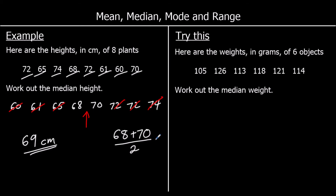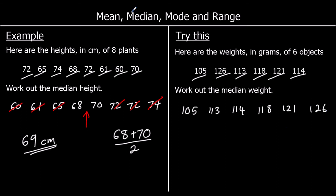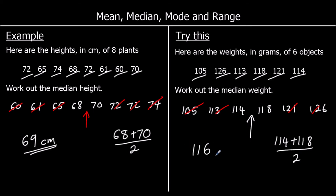Here's one for you to try. We're finding the median again, so put the numbers in order first: 105, 113, 114, 118, 121, 126. We can cross off two from both sides and we're left with two numbers in the middle, so we go halfway between them. Halfway between 114 and 118: 114 plus 118 divided by two gives us 116. So the median weight is 116 grams.